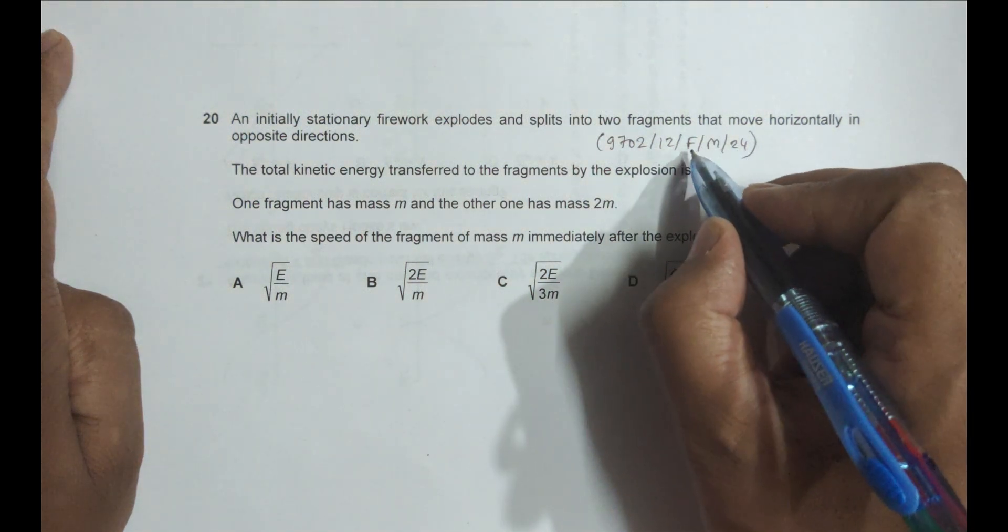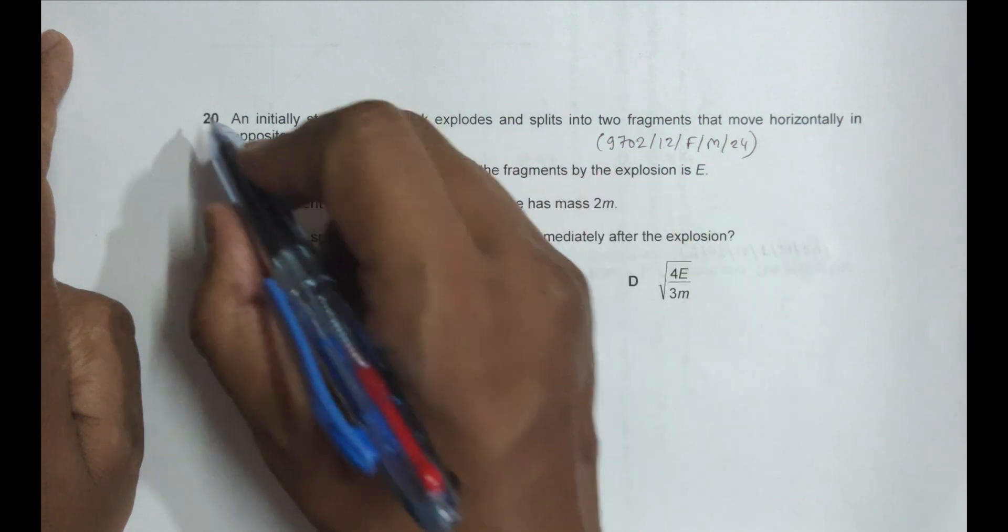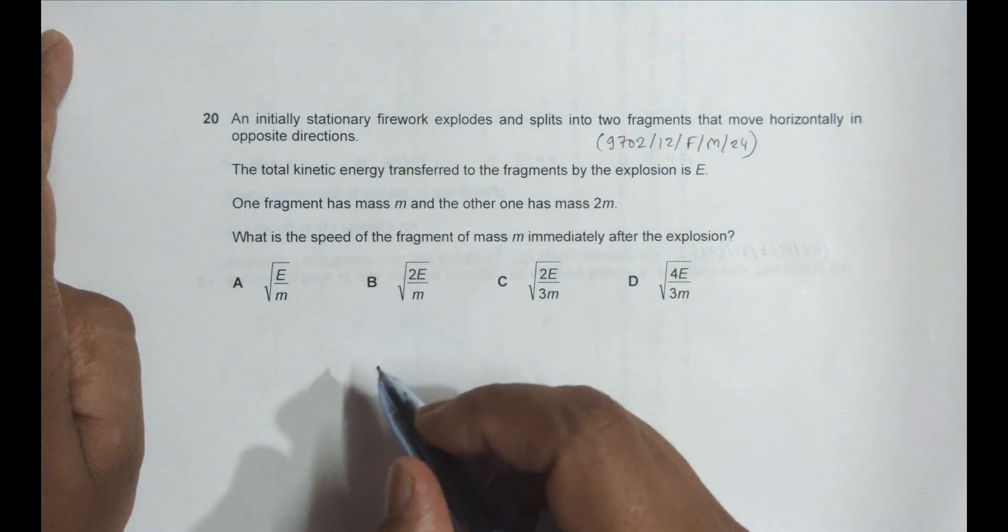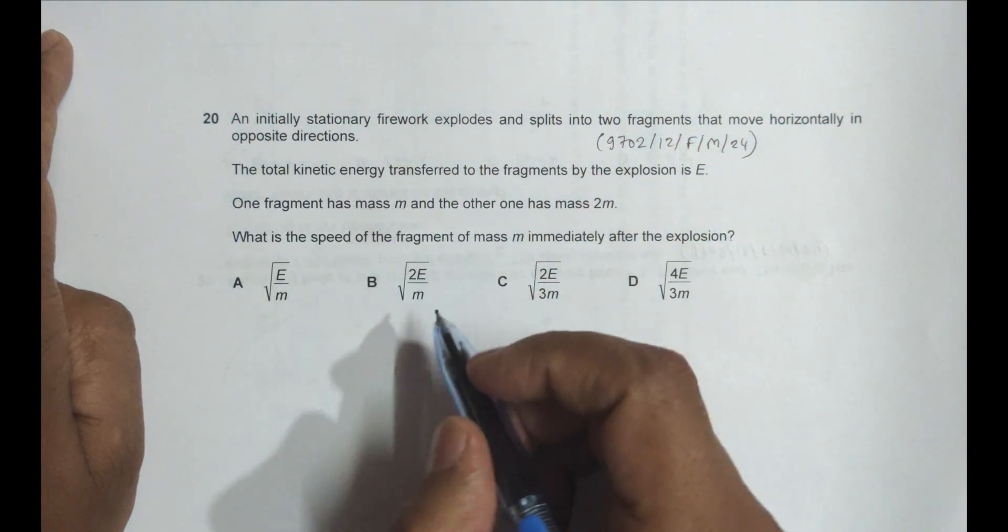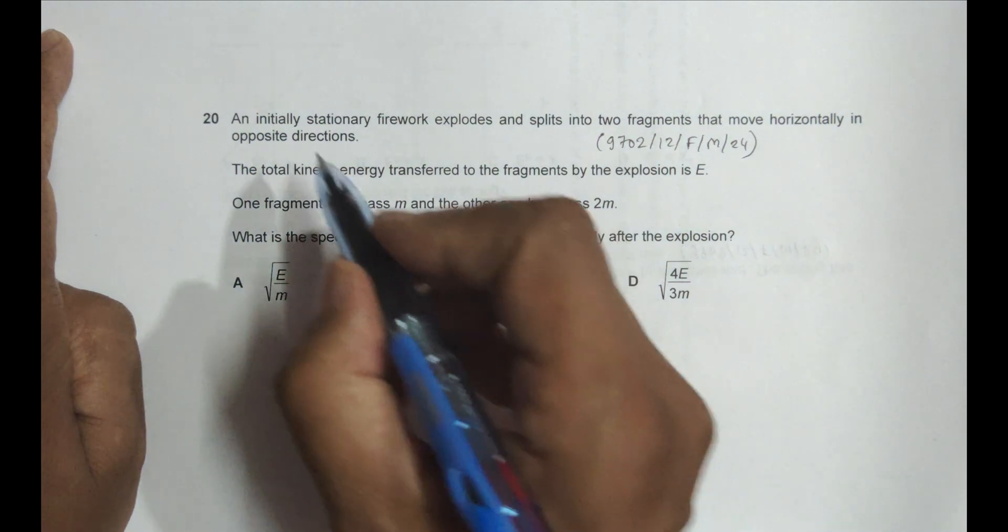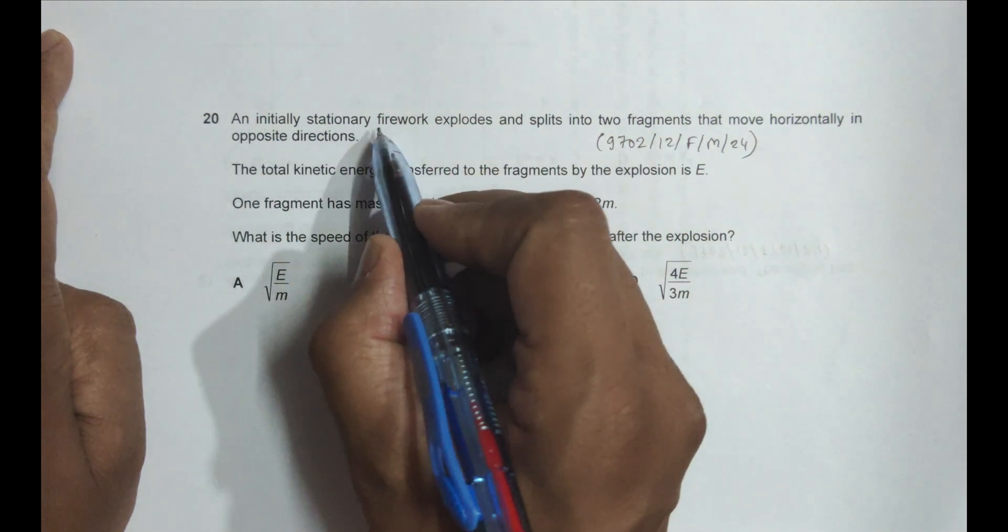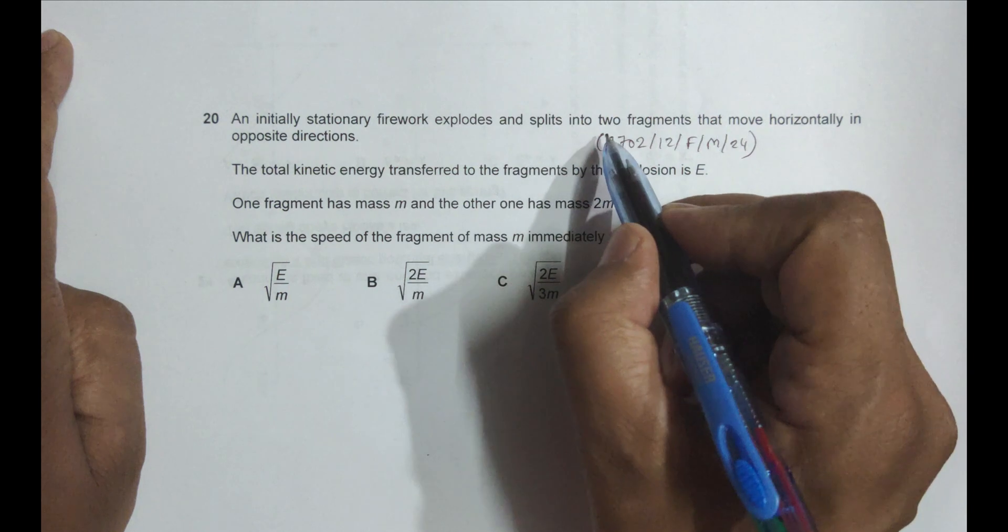Hello folks, this is 2024 February March session paper 1-2, question number 20. The question is concerned with the chapter dynamics. It says an initially stationary firework explodes and splits into two fragments.